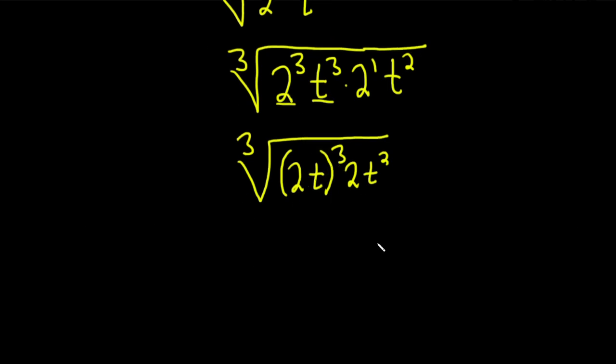So now we can take the cube root of each factor. So this is going to be the cube root of 2t cubed. And then here we have the cube root of 2t squared.